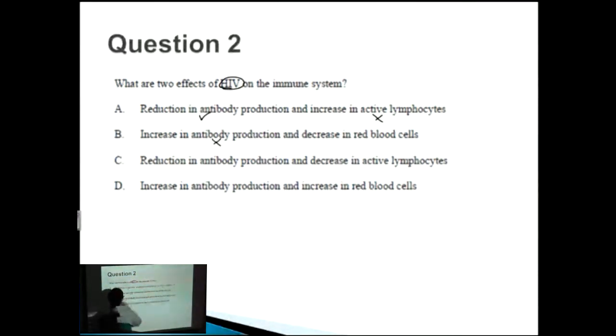So B, increase in antibody production? Straight away, no. We don't even need to look at that. C, a reduction in antibody production? Yes. And a decrease in active lymphocytes? Yes, that sounds about right. And D, increase in antibody production? No. Straight away, that's wrong. So we know the answer is C.